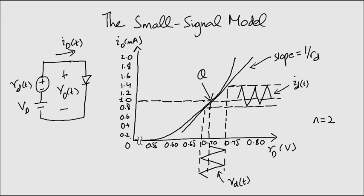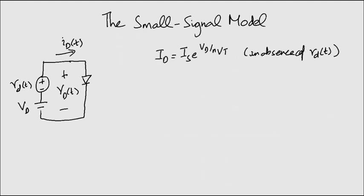In absence of the small signal, the diode will have a DC current ID given by this equation. This is because all the DC voltage VD appears across the diode in the absence of the small signal.